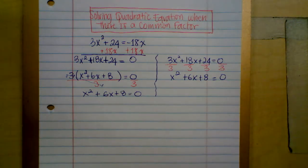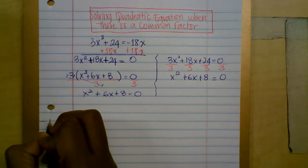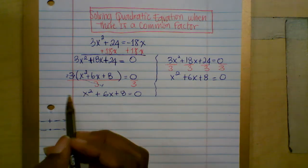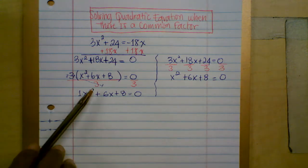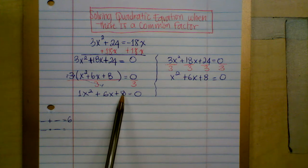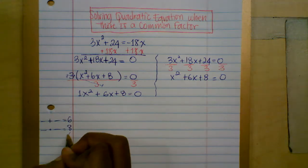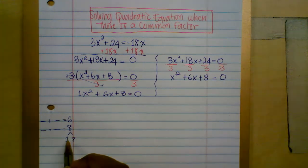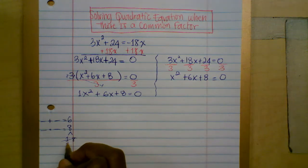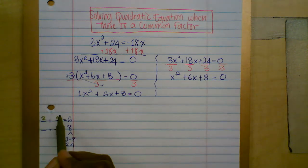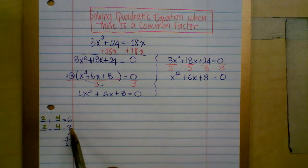For step two, let's factor. You want to find two numbers that add to b, which is 6, and multiply to a times c — here a is 1, so 1 times c is 8. Can you think of two numbers that multiply to positive 8 and add to 6? What about 1 and 8? They multiply to 8, but do they add to 6? No. What about 2 and 4? 2 times 4 is 8, and 2 plus 4 is 6. Yes! So the two numbers are 2 and 4.